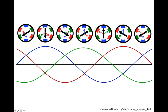If we keep doing this analysis for every time point, we find that the combined magnetic field represented by the black arrow completes a 360-degree rotation during one period of the sinusoid. Comparing the first and last black arrows, they point in exactly the same direction — the field has completed one full revolution during one period.